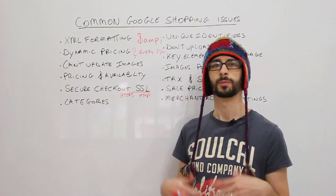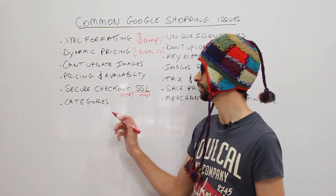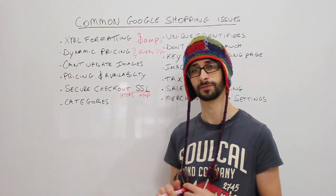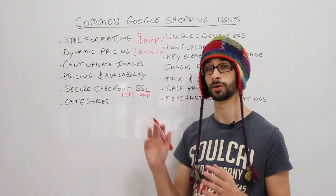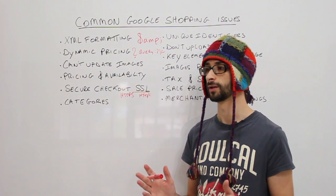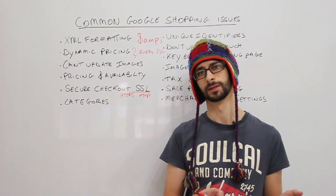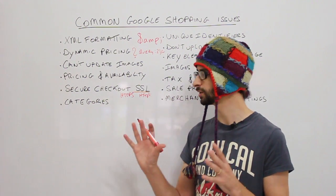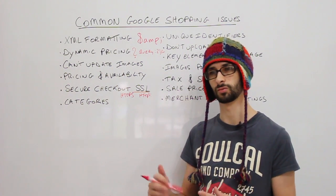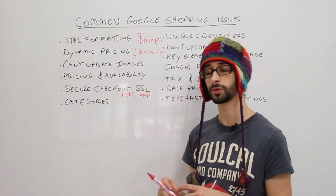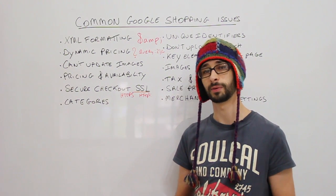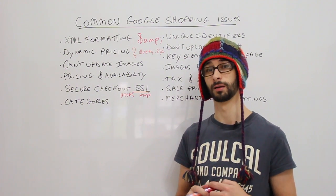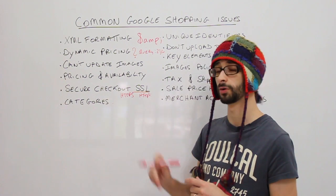Categories are something a lot of people forget about. The category is essentially where your product ends up in the Google Shopping feed, so these need to be correct. For example, if you have a part for a vehicle, don't put it in apparel. It needs to be in the right category as this affects how Google ranks your products. There is a taxonomy spreadsheet you can look at to identify where your products belong.